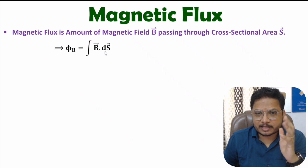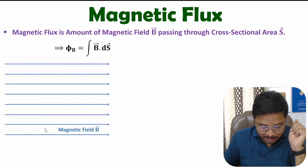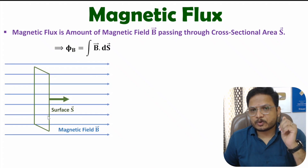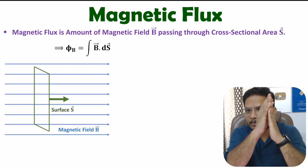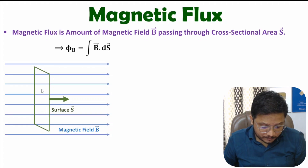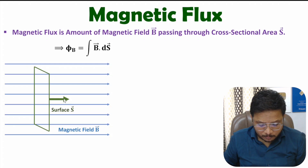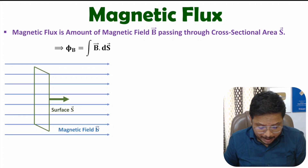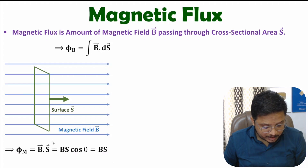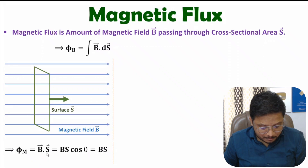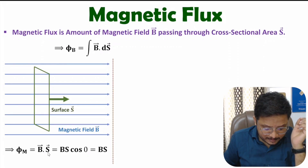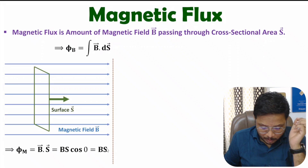Let me explain this by some case studies. You can observe here we have a magnetic field happening in this direction, and here we have a surface area. The direction of the surface is perpendicular to the surface. Here the surface and magnetic field are both in the same direction, meaning the angle between them is zero. As per the basic definition, magnetic flux is B·S, which means B·S·cosθ. Since θ is zero, cosθ is one, so magnetic flux equals magnetic field multiplied by area — the maximum possible flux.